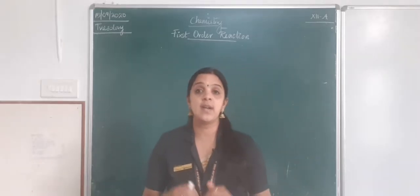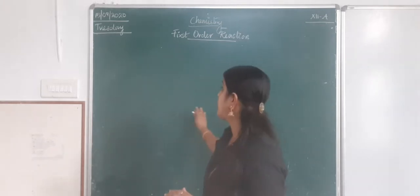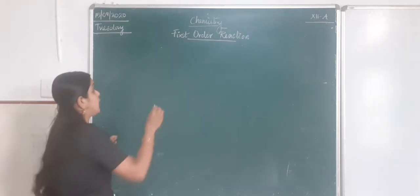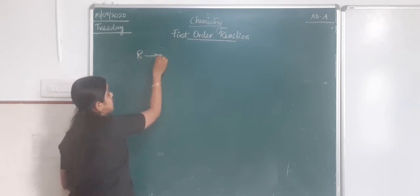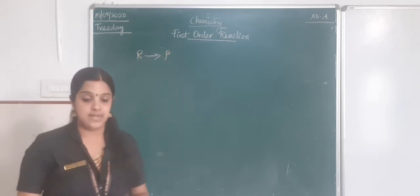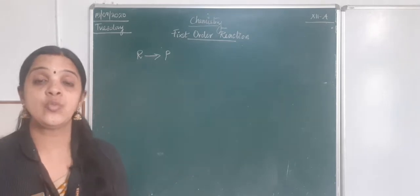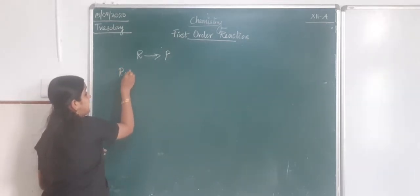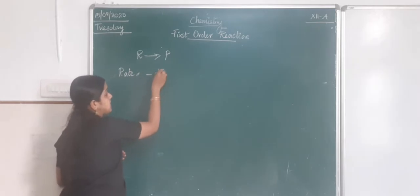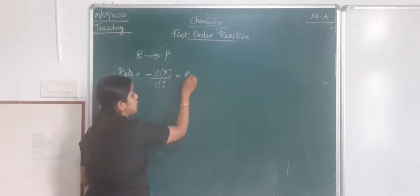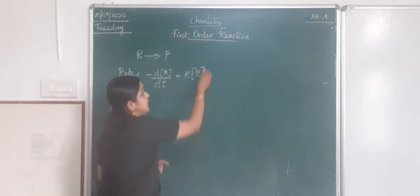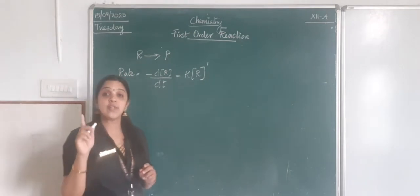Now we are going to look at a first-order reaction in terms of the integrated rate equation. Consider a first-order reaction where R is the reactant which gets converted to product P. The rate is given by the differential rate equation: −dR/dt = k[R]^1, because it is a first-order reaction.